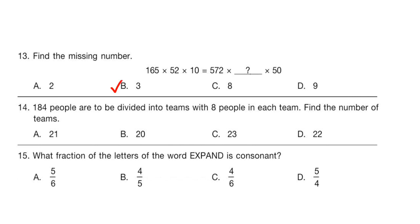Question 14: 184 people are to be divided into teams with 8 people in each team. Find the number of teams. Simply divide 184 by 8. The correct answer is option C, which is 23.